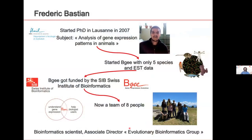And now I'll give the floor to Frédéric. I'm Frédéric Bastian. I also studied in France — I have a background in ecology and evolution. I joined the lab of Marc in 2007, and my work was to study the evolution of gene expression after duplication. For this, we wanted to build a database allowing comparison of gene expression between as many species as possible. At the time, that was only five model species: Xenopus, zebrafish, mouse, and human. At the end of my PhD, the Swiss Institute of Bioinformatics decided to support BG, so I stayed in Lausanne, and the team has grown over the years.